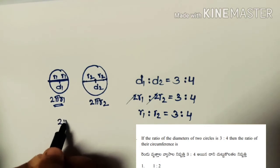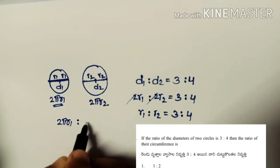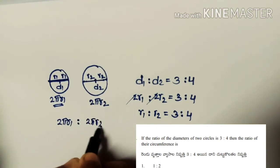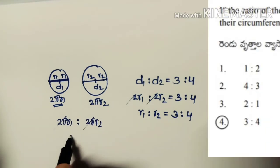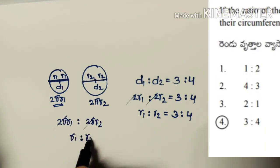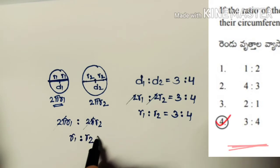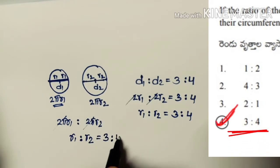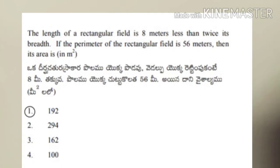The ratio of circumferences = 2πr₁ : 2πr₂. The 2π cancels, leaving r₁:r₂ = 3:4. So the ratio of circumferences is 3:4, which is the last option.